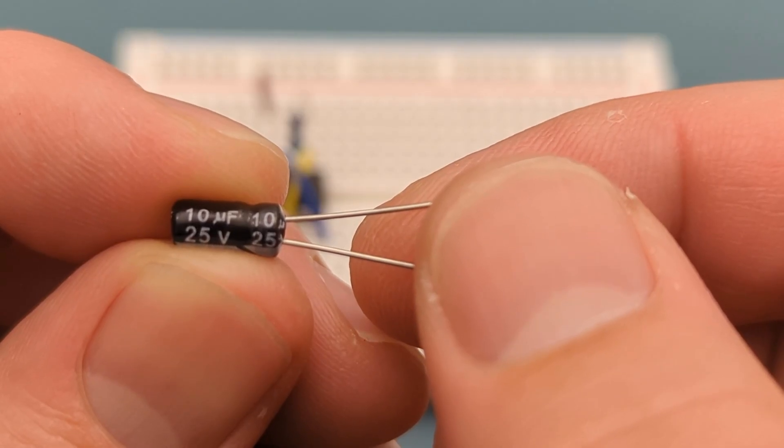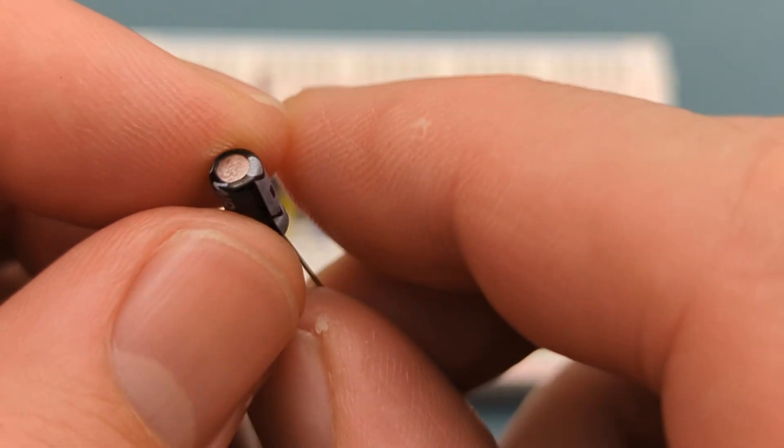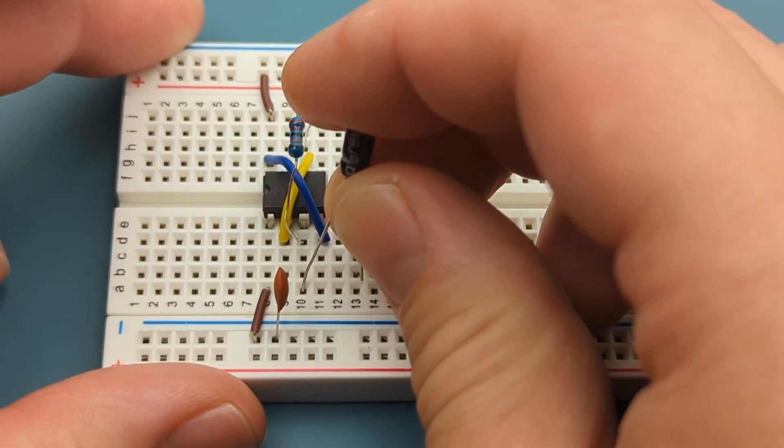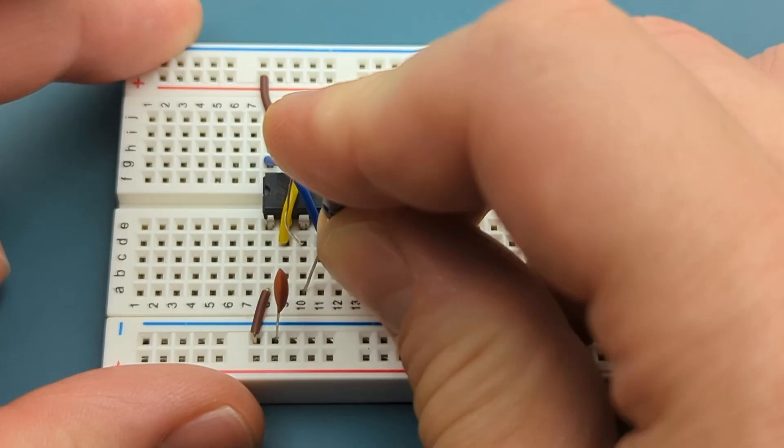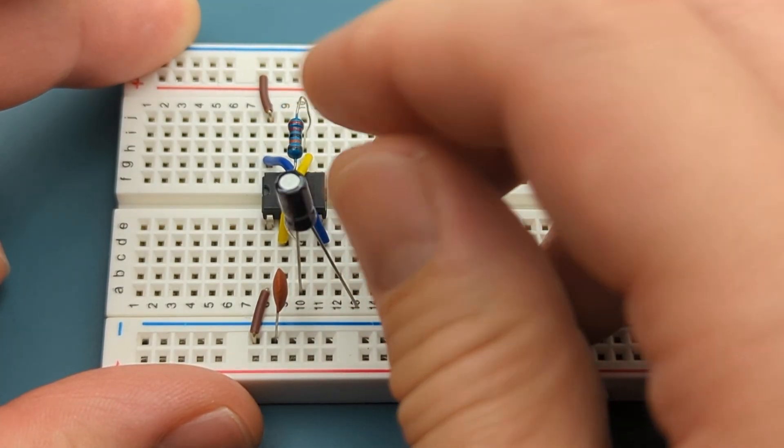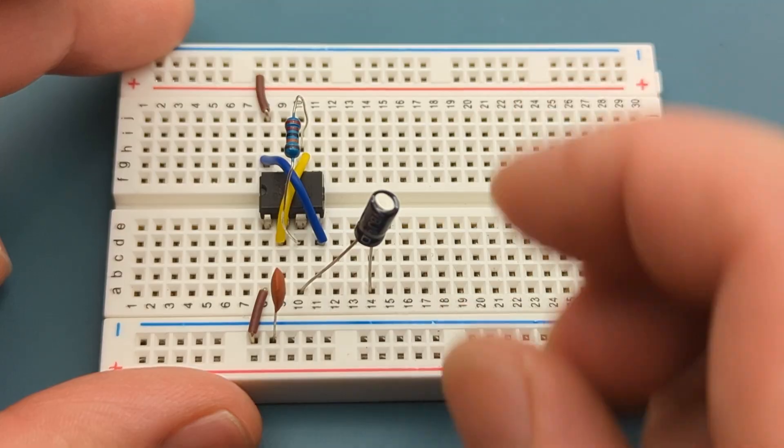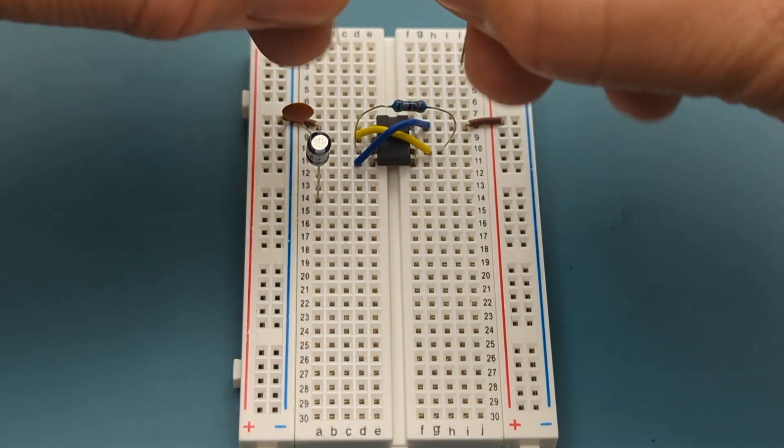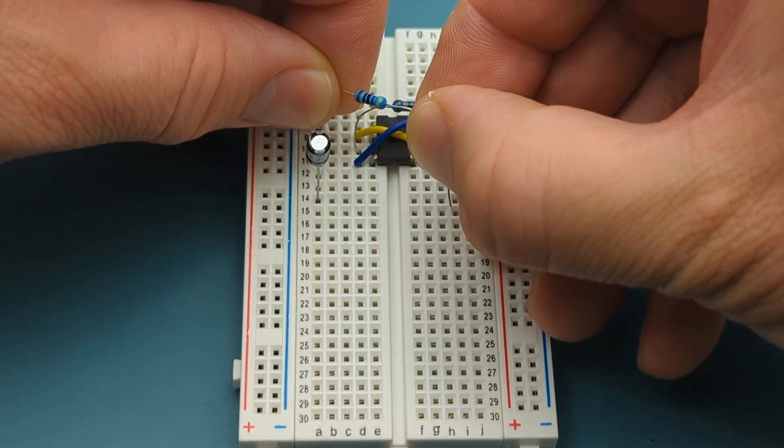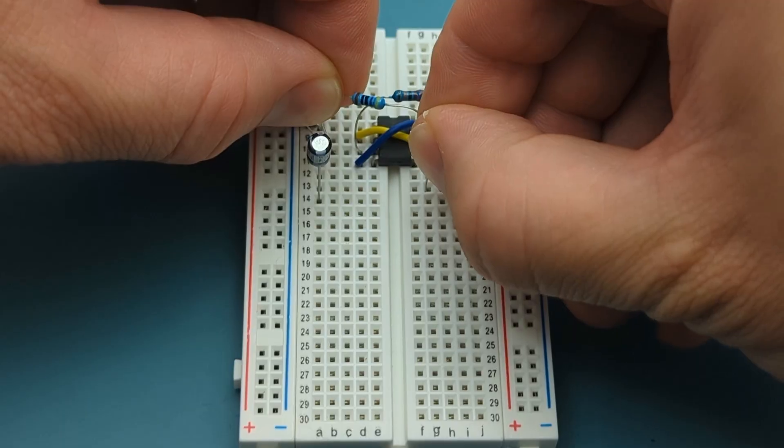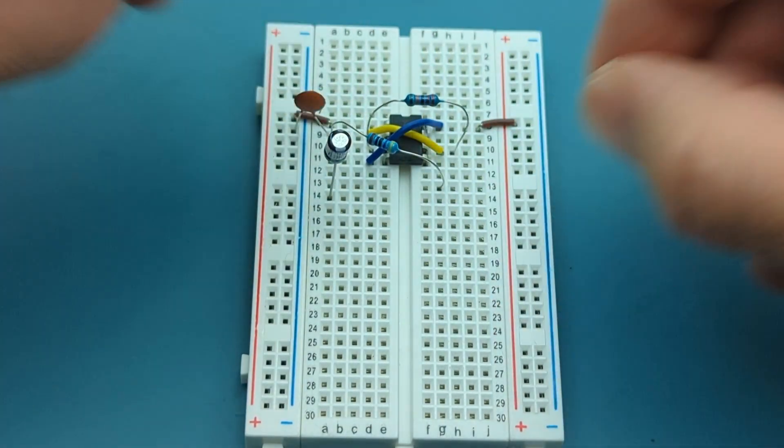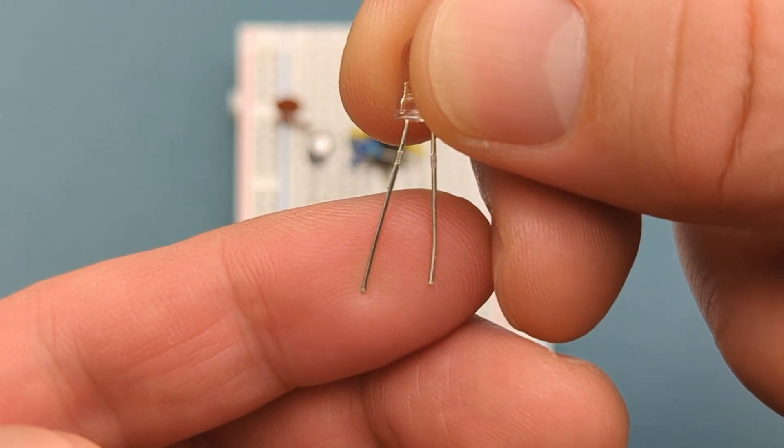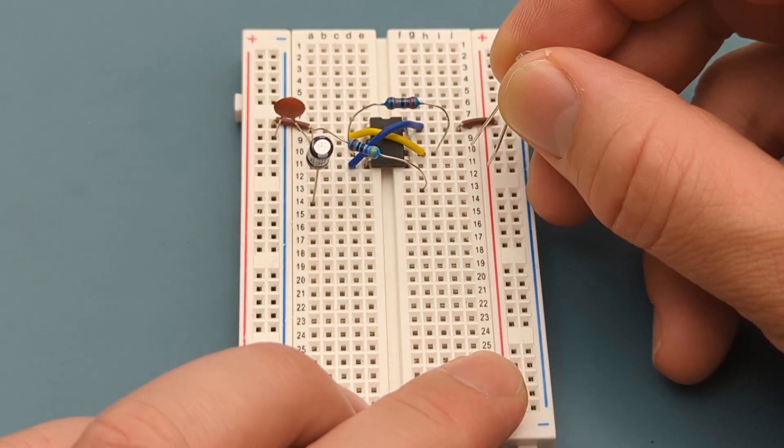Insert a 10 microfarad capacitor into pin 3 or output and a few rows below the 555 timer. The anode is in pin 3. Bend the ends of a 470 ohm resistor. Insert the 470 ohm resistor into pin 3 or output in a few rows below the 555 timer. Insert a white LED into pin 5 or control in the same row as the resistor. The anode is in pin 5.